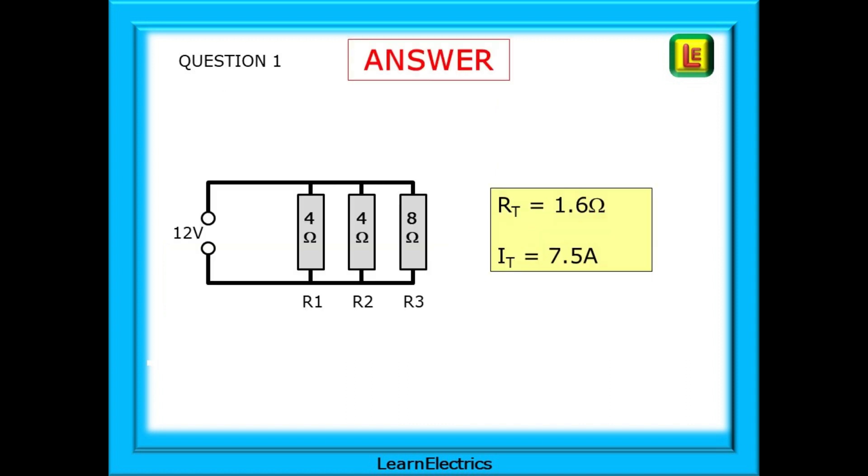And here are the answers for practice question one. RT is 1.6 ohms. And the total current that you would have calculated is 7.5 amps.